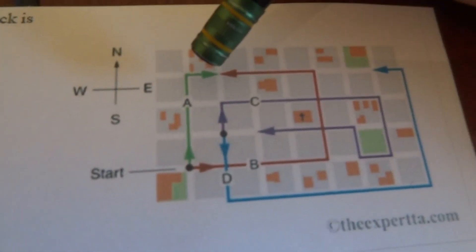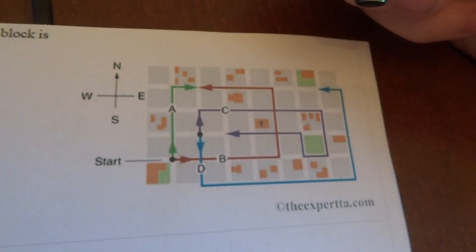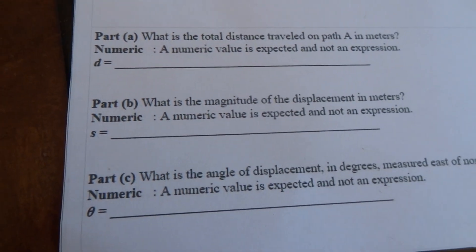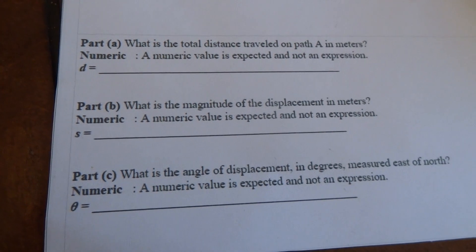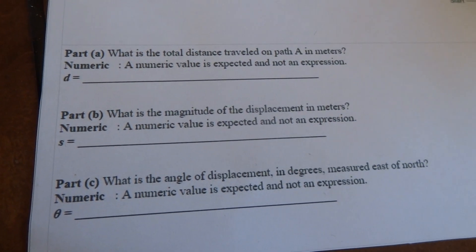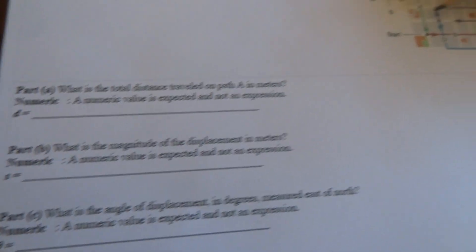For part A it asks what is the total distance traveled on path A, and so all we need to do is just count up how many sides it takes up, so 1, 2, 3, 4.